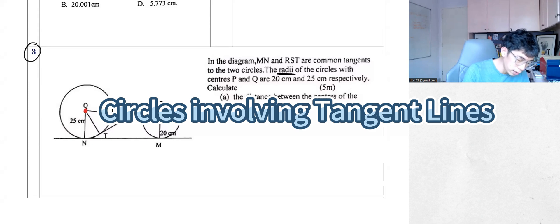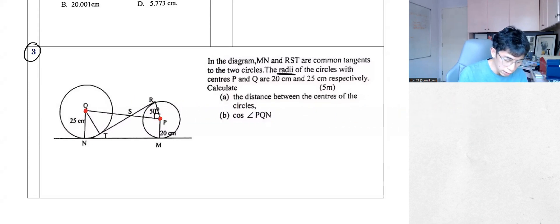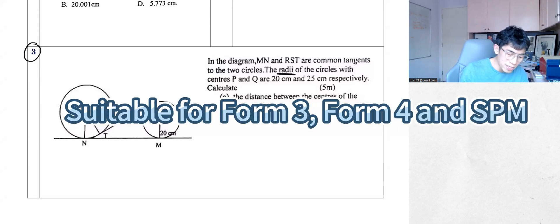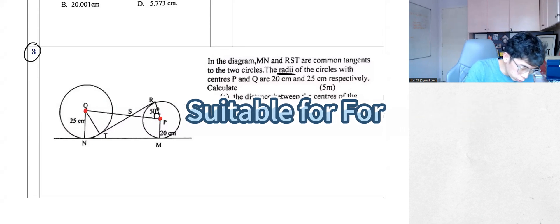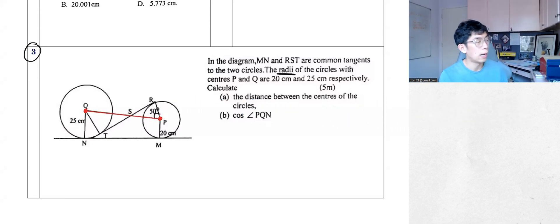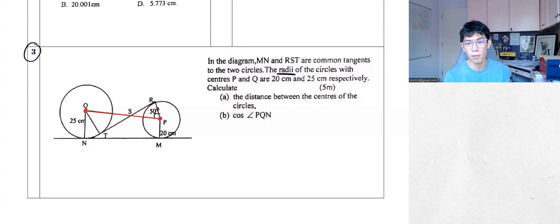They said that the center PQ are 20 cm and 25 cm respectively, so that's already given. Then calculate the distance between the centers of the circles — so they want you to calculate this red color line. That's what they want you to calculate.